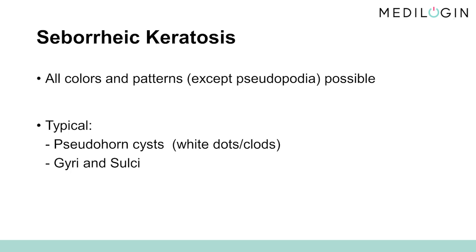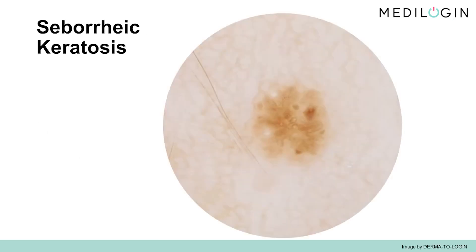These are keratin-filled invaginations of the epidermis, with different pigmentation. Another pattern which often appears in the facial area is the fingerprint-like pattern. This results from parallel light brown stripes in flat seborrheic keratoses. In order for you to better remember, we have prepared two picture examples. Here you can see a beginning, but still very small, seborrheic keratosis. As discussed earlier, it resembles a melanocytic lesion. However, you will quickly recognize a classic criterion of seborrheic keratosis.